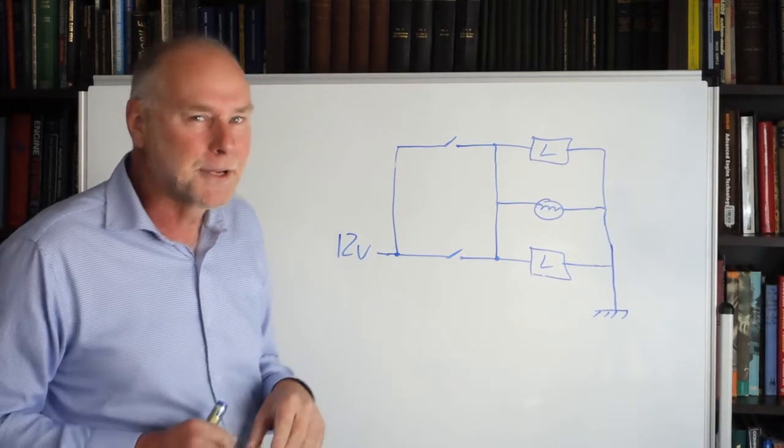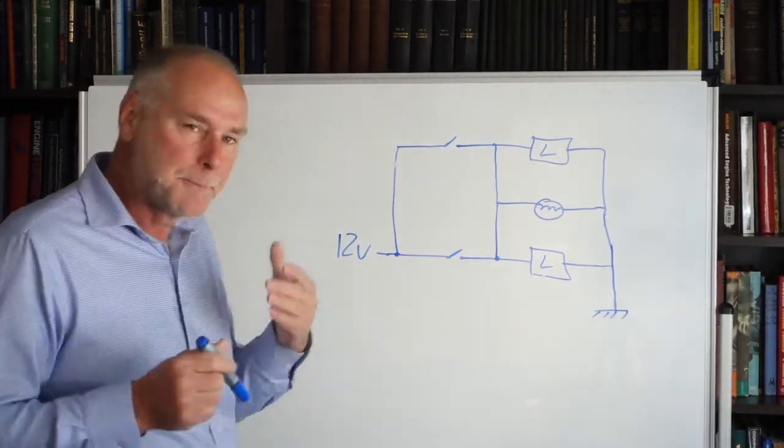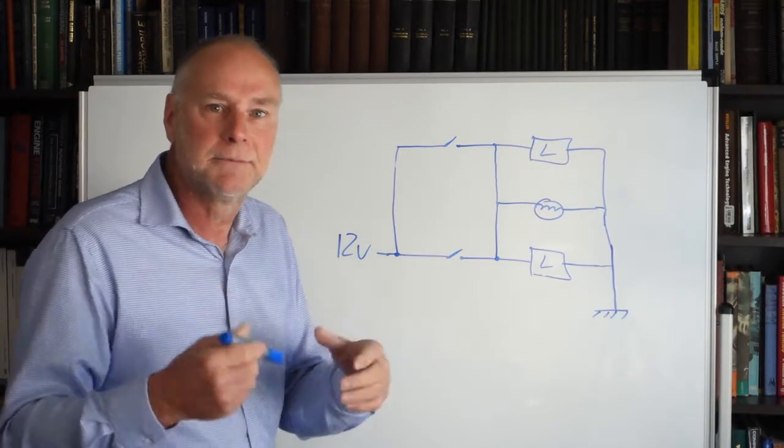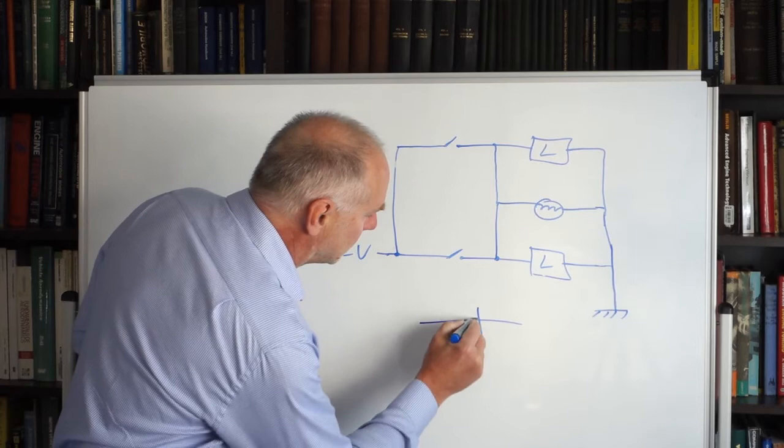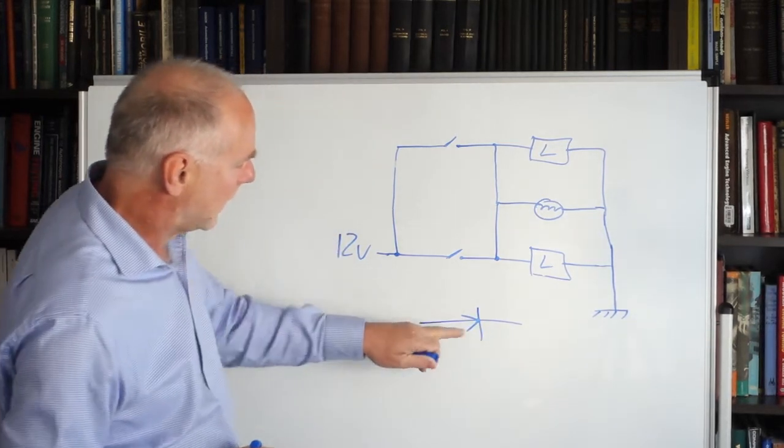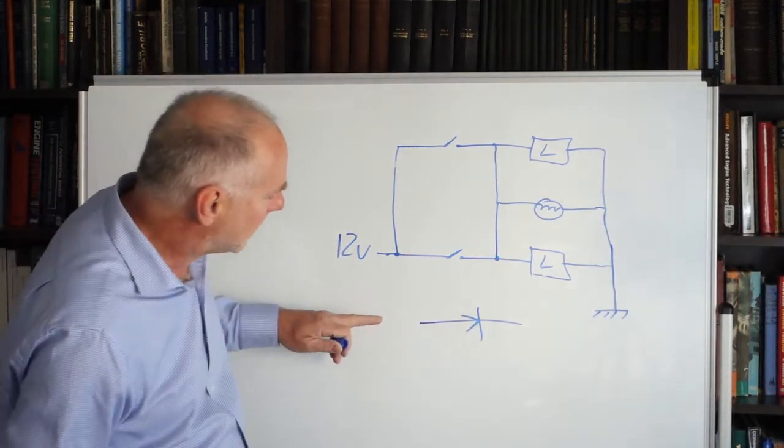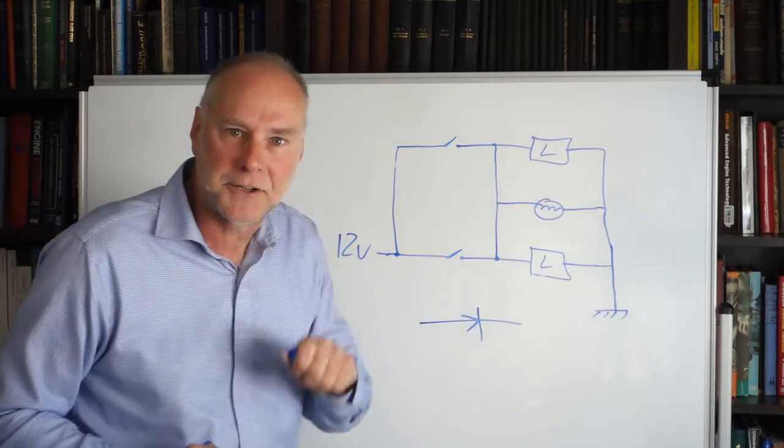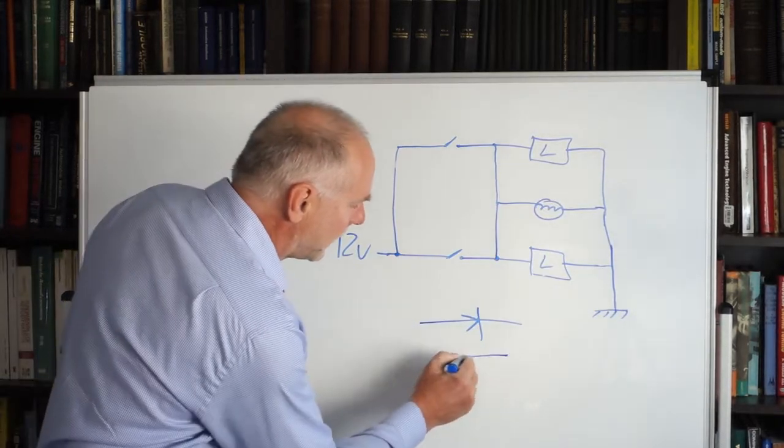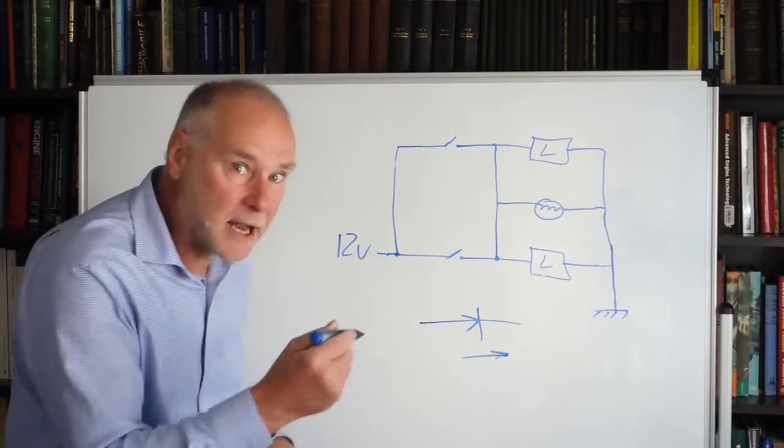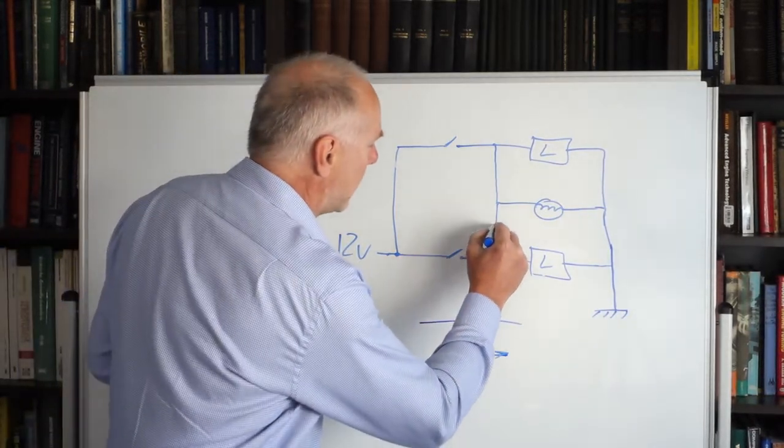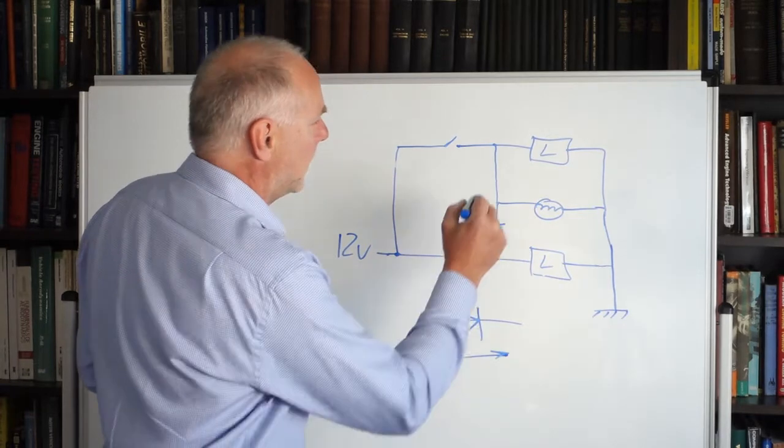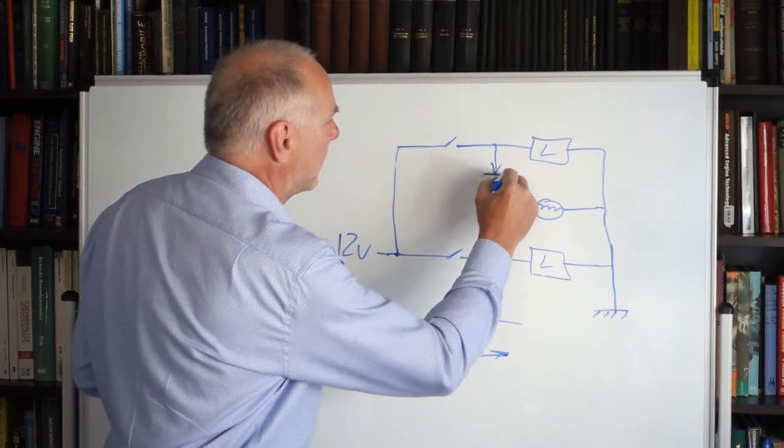No, we don't. We can use a couple of diodes, a couple of those one-way valves. Let's have a look at the circuit symbol for a diode. So here is a diode. That's the circuit symbol for a diode. It means electricity can flow in the direction of the arrow. It can't flow back the other way. So let's add a diode to the circuit. Let's put a diode there, and let's put a diode there.